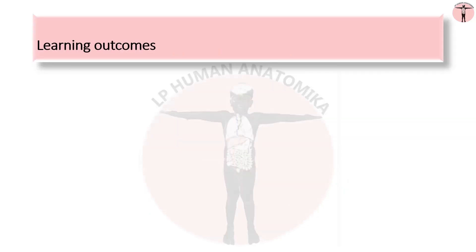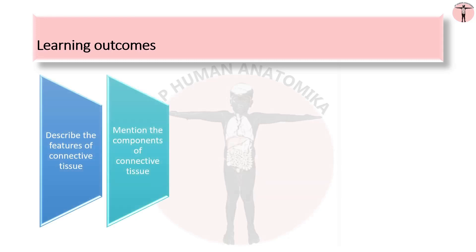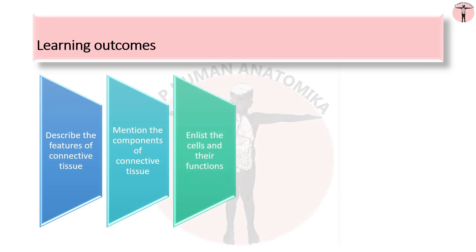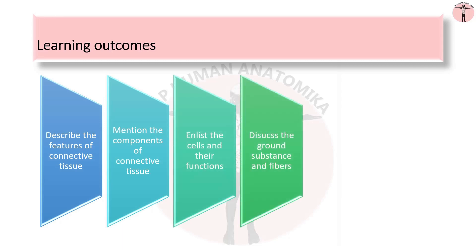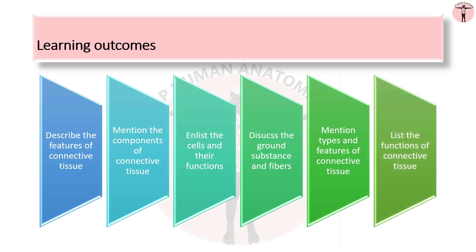By the end of the session, you should be able to describe the features of connective tissue, mention the components of connective tissue, enlist the cells of connective tissue and their functions, discuss the ground substance and fibers of connective tissue, mention the types and features of connective tissue, and list the functions of connective tissue.